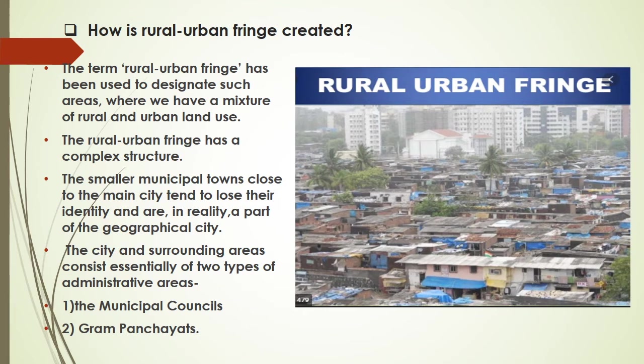Now how is rural urban fringe created? When this existence of rural and urban fringe came about, the term rural urban fringe has been used to designate such areas where we have a mixture of rural and urban land use. Rural urban fringe is an area where you can get the feel of both rural as well as urban land use in one area.